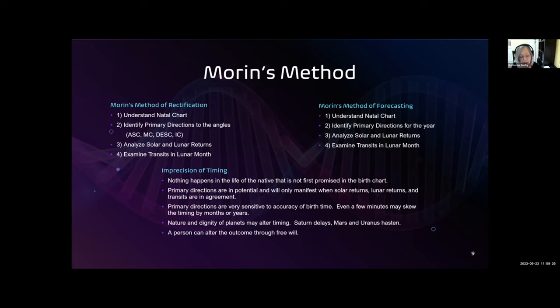If they don't agree, the event either won't happen or will be minor. To narrow down the timing of the event, each month's lunar return is examined. And finally, to get to the appropriate day, transits are used.